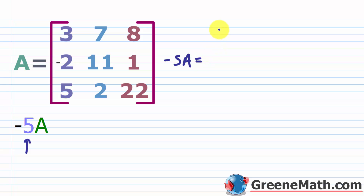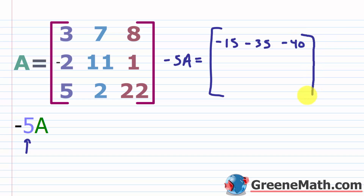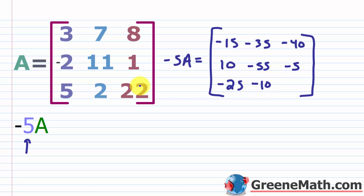So negative five A is equal to: three times negative five is negative 15, seven times negative five is negative 35, negative five times eight is negative 40, negative five times negative two is positive 10, negative five times eleven is negative 55, negative five times one is negative five, negative five times five is negative 25, negative five times two is negative 10, and negative five times twenty-two is negative 110. This matrix is a scalar multiple of the original matrix A.